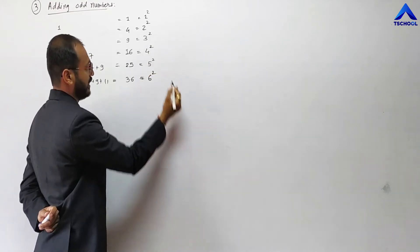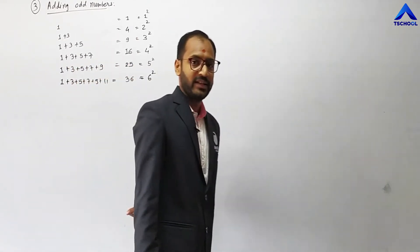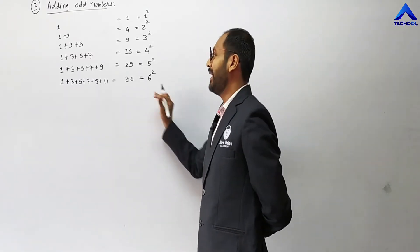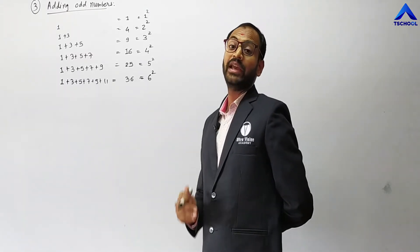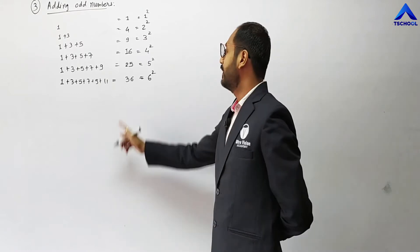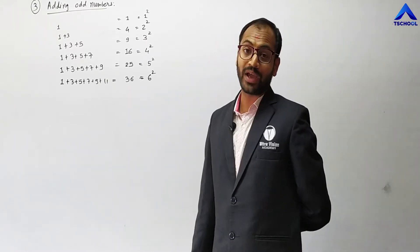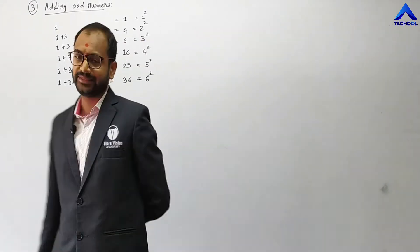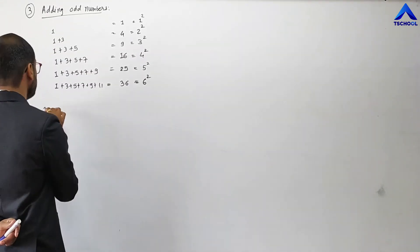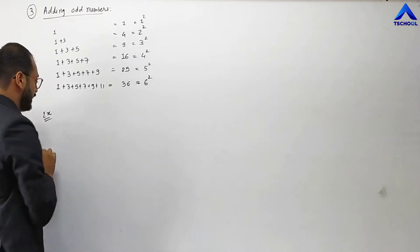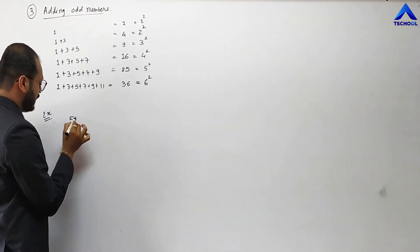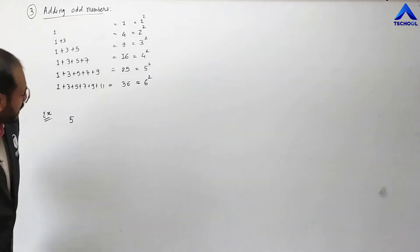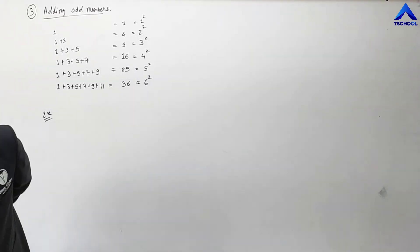By using this type of pattern, we can check whether a given number is a perfect square or not. Let me take the example of 64. We should subtract term by term, which will give the addition of the odd numbers.